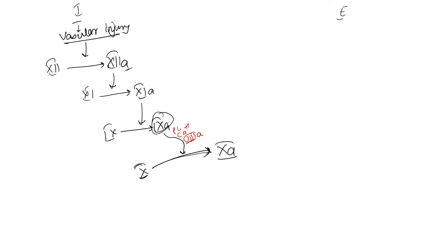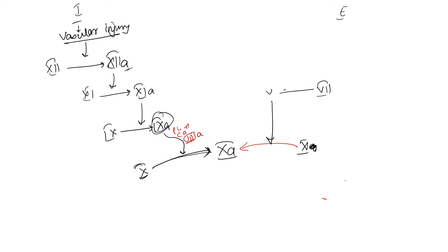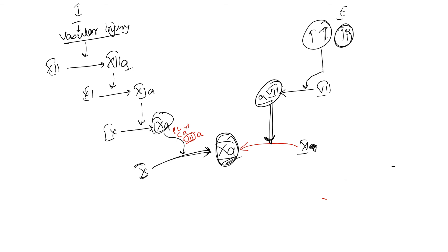That was the intrinsic pathway. Now for the extrinsic pathway, we again need to produce factor 10A. In the extrinsic pathway, when tissue is damaged, a substance called tissue thromboplastin — also called tissue factor — is released. This tissue factor activates factor 7, and activated factor 7 then activates factor 10 to 10A.